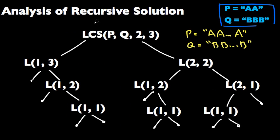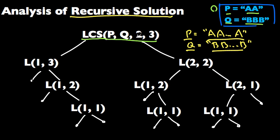Here's a quick analysis of our recursive solution. We'll look at one of the worst case scenarios when P and Q don't have any characters in common, and we'll look at this particular example when P equals AA and Q equals BBB. First we'll call LCS of P, Q, 2, 3 because we have two characters and three characters. And to find that we need to call LCS of P, Q, 1, 3, I just abbreviated as L13, and we'll also need to call L22. And to find L13 we need to call L03 which is a base case, and L12, and so on.